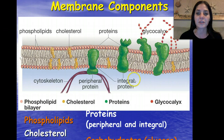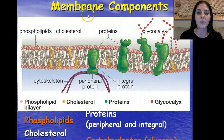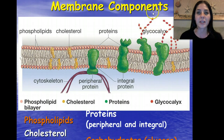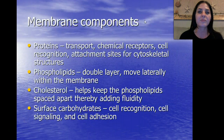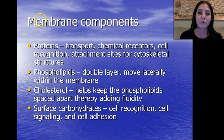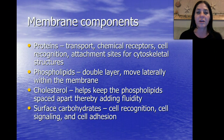We also have proteins. We have integral proteins, which span the entire length of the plasma membrane, and peripheral proteins, which go across only a portion. We have carbohydrates, which help in cell signaling. The proteins serve for transport, chemical receptors, cell recognition, and attachment sites for cytoskeletal structures.